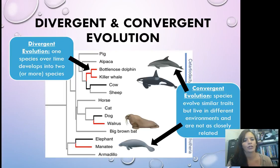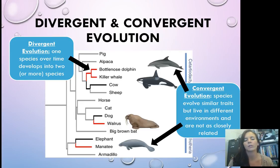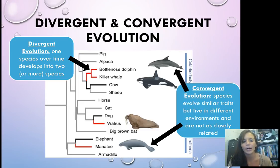So divergent and convergent evolution — these are two terms that typically get mixed up very easily. Divergent is just one species developing into two over time. If you look at the cladogram here, the bottlenose dolphin and the killer whale are both very closely related — they came from a common ancestor. Convergent evolution is when species have similar traits but don't live in the same area and aren't as closely related. An example is a dolphin and a manatee — both aquatic, both mammals, but with very different traits living in very different environments.